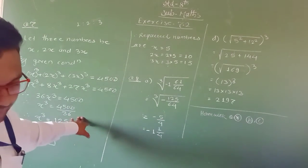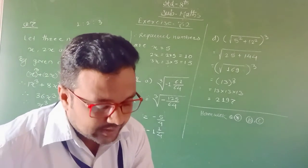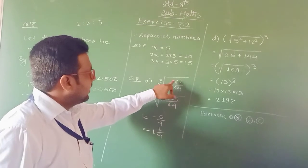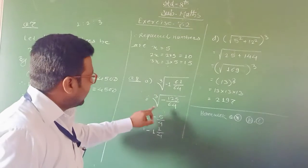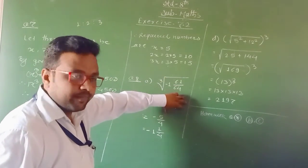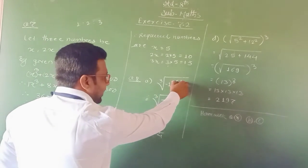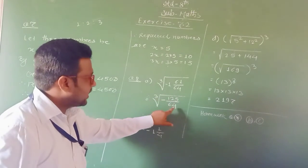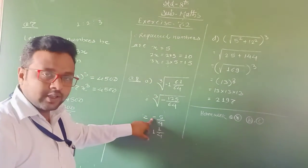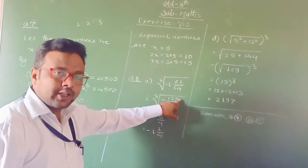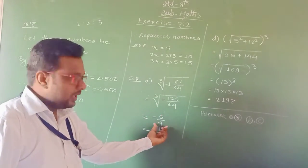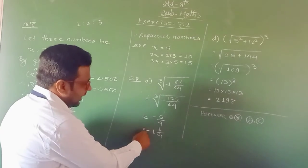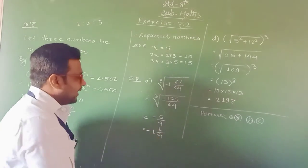Now we see the next question — question number 8: Evaluate the following. I take first example A: cube root of minus 1 whole 61 upon 64. We write this mixed fraction as an improper fraction: 64 × 1 + 61 = 125, so it becomes minus 125 upon 64. Cube root of a negative number is negative. Cube root of 125 = 5, and cube root of 64 = 4. So the answer is minus 5 upon 4, which in mixed form is minus 1 whole 1 upon 4.